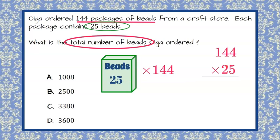So we're going to set up our multi-digit multiplication. 144 multiplied by the 25 beads in each of the 144 packages. So now that I've lined up my digits, I'm going to do 4 times 5, which is 20. So 0, and then carry the 2. 5 times 4 is 20, plus the 2 we carried is 22. So 2, carry the 2. 5 times 1 is 5, plus 2 is 7.